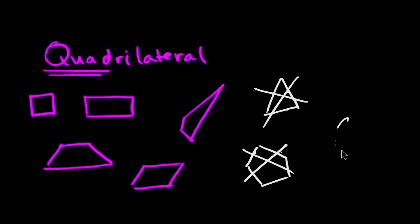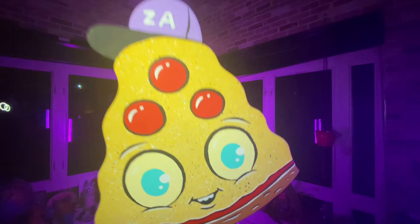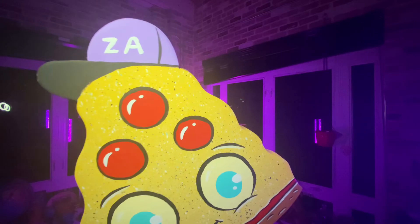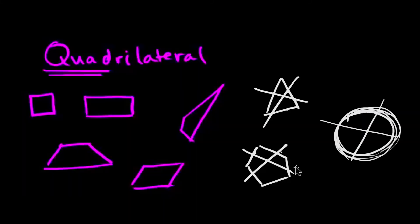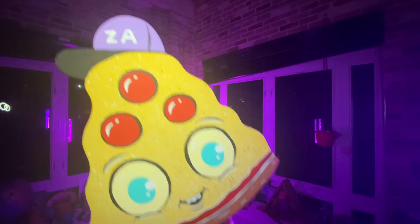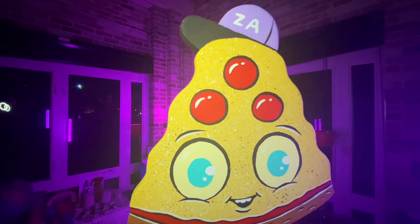A circle has — I guess you could say — no sides. It's just one big curve. It's a circle. That's not going to be a quadrilateral. If you had six sides, seven sides, a hundred sides, none of that is going to be a quadrilateral.